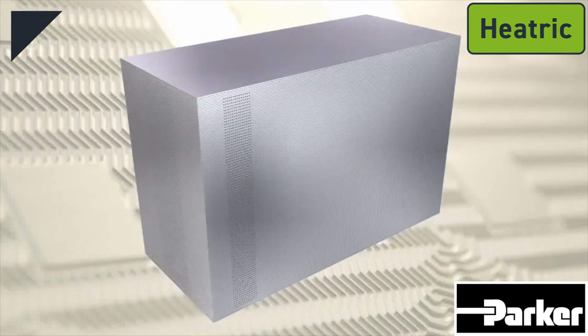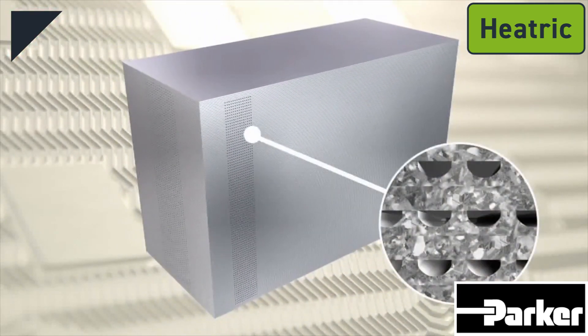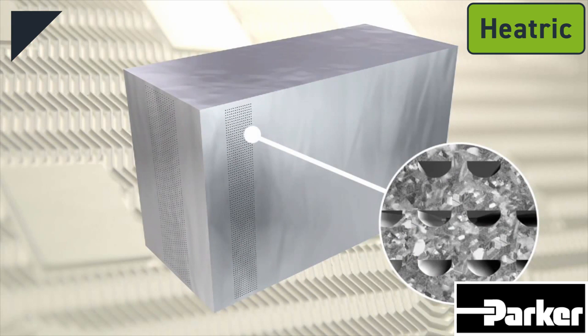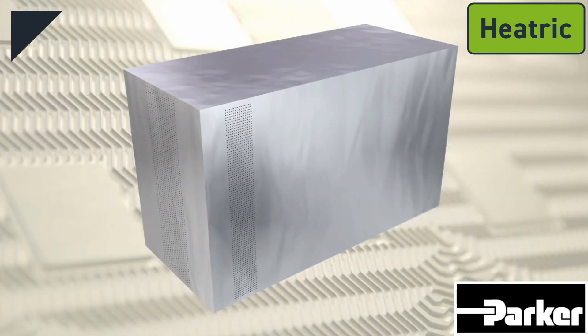Diffusion bonding is a solid state joining process where, under high temperature and pressure, grain growth takes place at the interface of two metal surfaces in contact with each other. The resulting bond achieves the same mechanical strength as the original material.